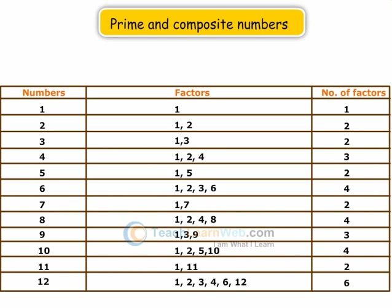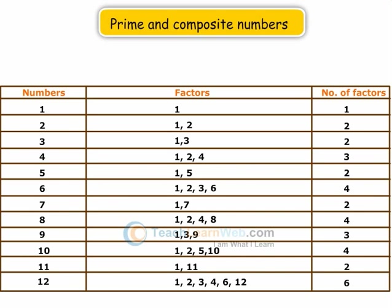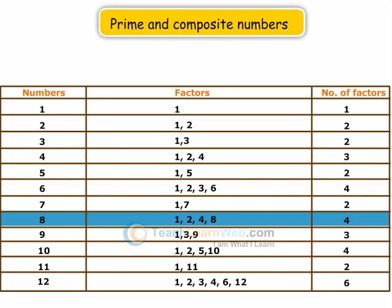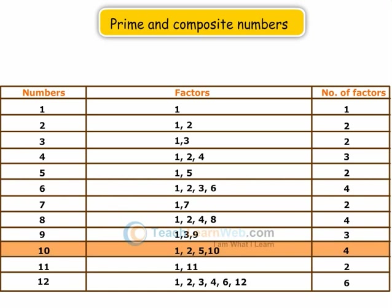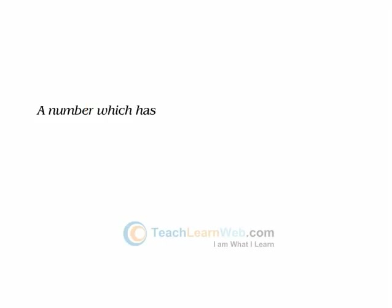There are numbers having more than two factors, like 4, 6, 8, 9, and 10, and so on. These numbers are composite numbers. A number which has only two factors — 1 and itself — is called a prime number.